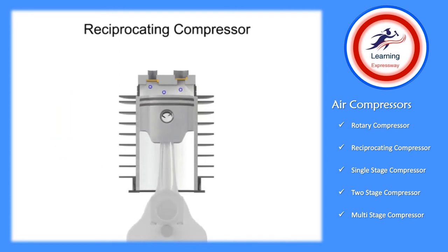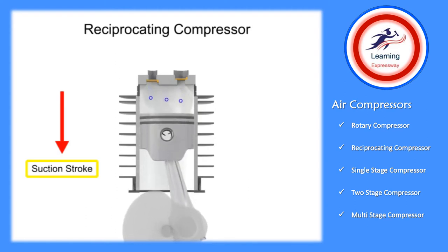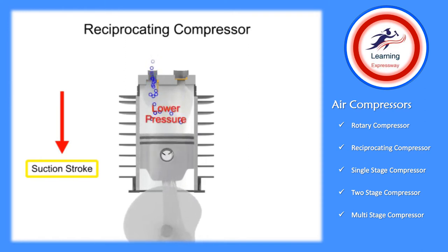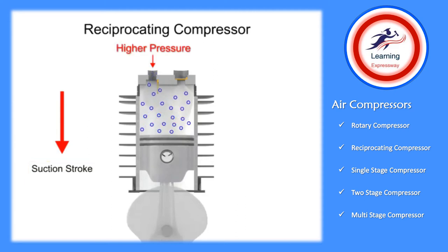As the piston moves downward on its suction stroke, the volume increases within the cylinder. As the volume increases, the pressure within the cylinder becomes lower than the inlet air pressure. This allows the higher pressure outside air to push open the inlet valve and allow more air into the cylinder.